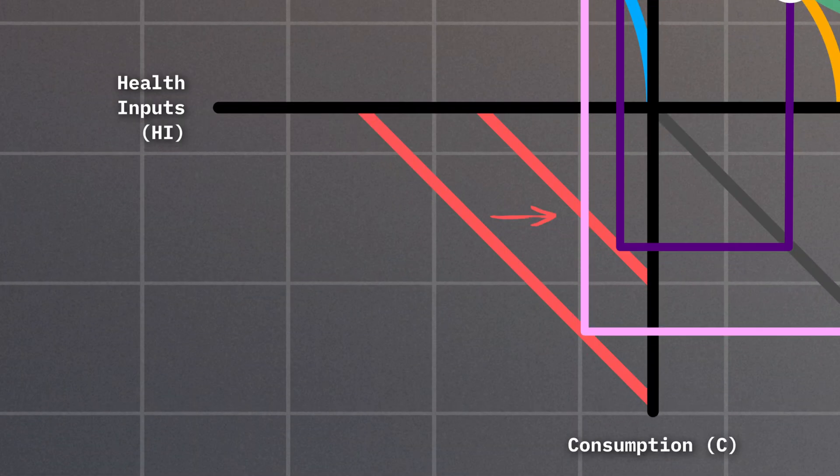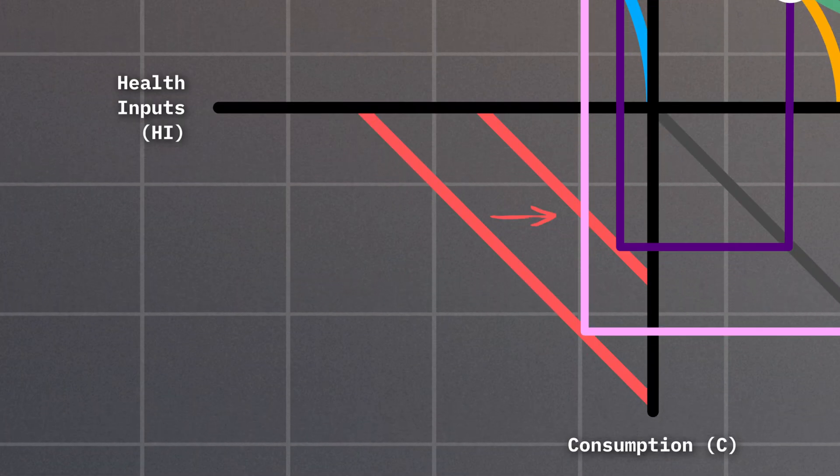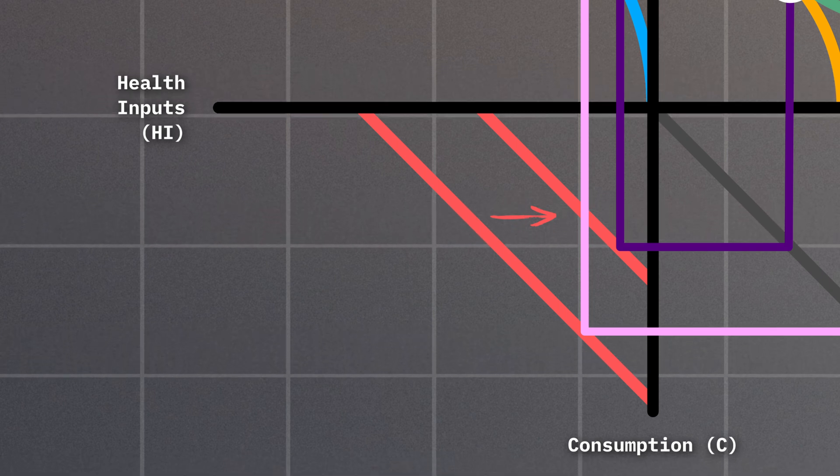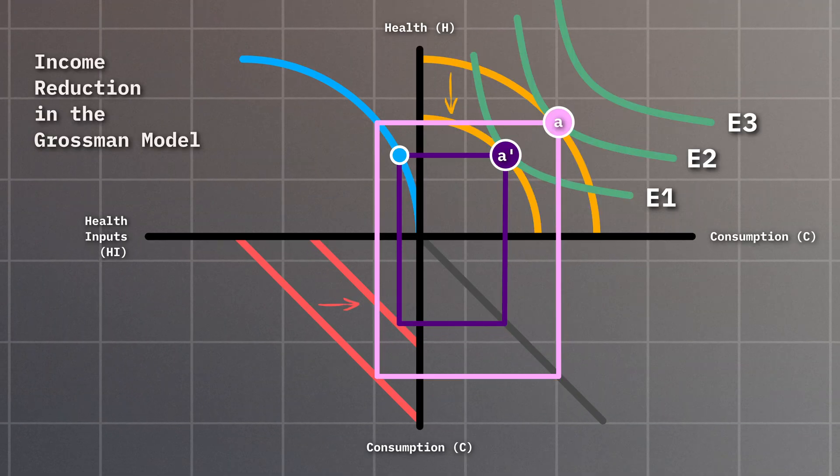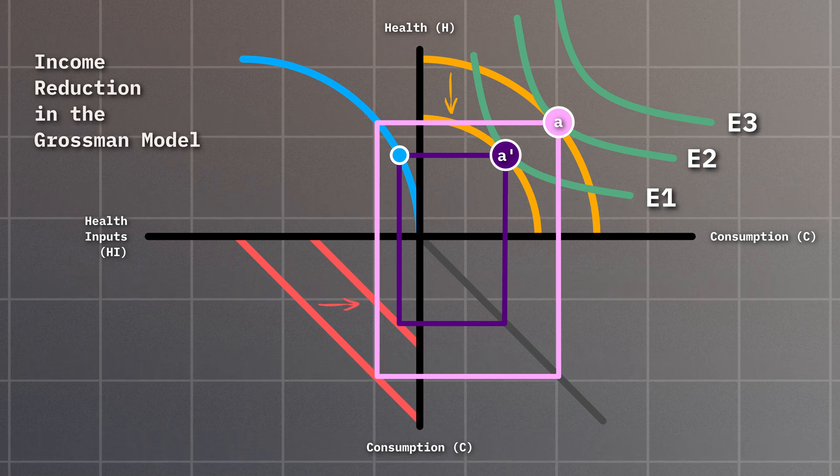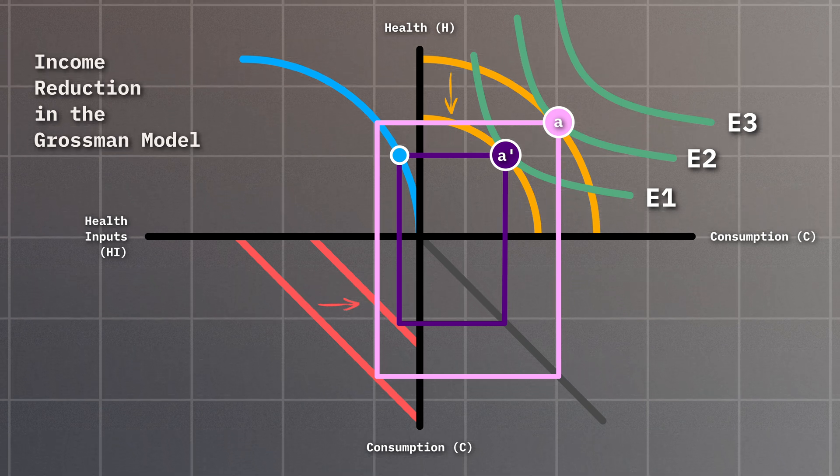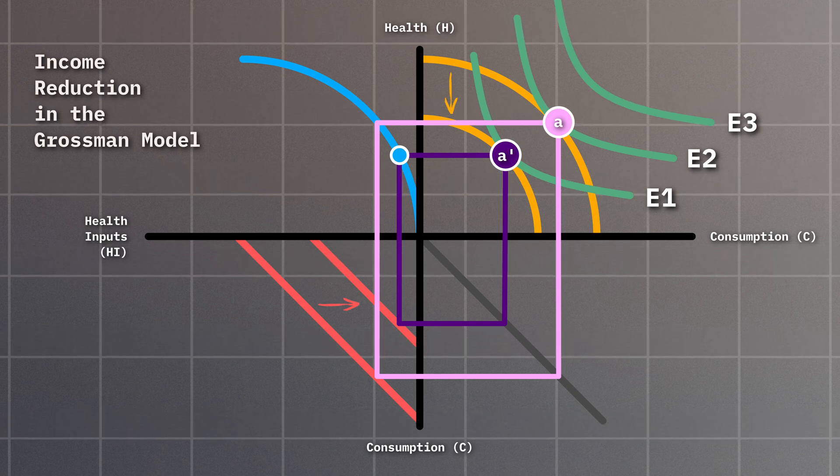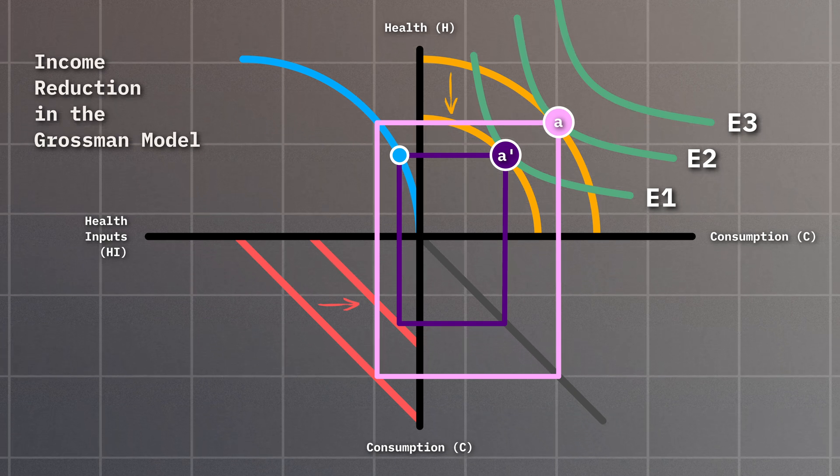Before we draw our line further, we also need to change the budget constraint, which shifts to the right as a result of our income reduction. Using our updated budget constraint line, we can complete connecting the dots in the four quadrants, showing that an income reduction leads to worse health outcomes, lower consumption, and buying of fewer health inputs, as depicted by the A' rectangle.